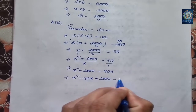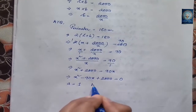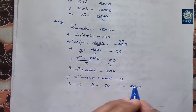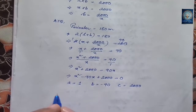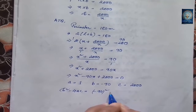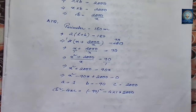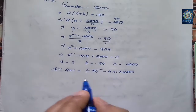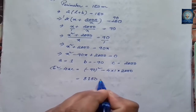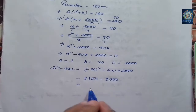Now we can use the Sridharacharya formula. For that, a equals 1, b equals minus 90, and c equals 2,000. First, let us compute the discriminant: b squared minus 4ac equals (minus 90) squared minus 4 into 1 into 2,000 equals 8,100 minus 8,000.